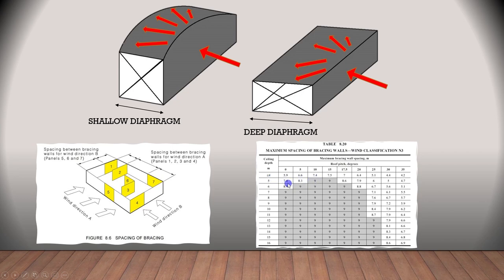An easy way to understand this concept is imagining the house as a wind beam. The deeper the beam, the higher its capacity to distribute the forces out without deflecting too much. If you have a look at this deep diaphragm, the force can still reach the bracing panel, while in the shallow diaphragm, the forces cross the whole ceiling without engaging the bracings.